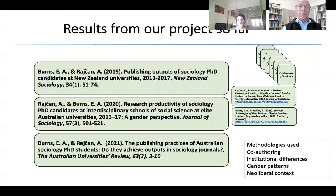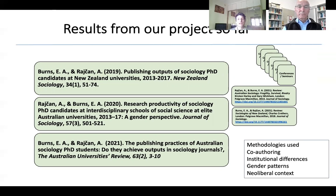In terms of results from our project so far, we published two productivity studies — one on New Zealand and one on a group of Australian universities. Our third paper, recently published in the Australian Universities Review, is about knowledge production practices of sociology PhDs and their contribution to the academy. We also discussed in this article the impact of the Excellence in Research in Australia exercise on the discipline of sociology in Australia.